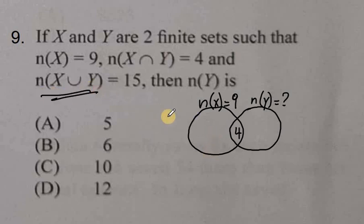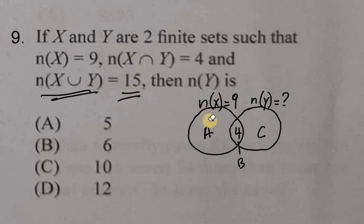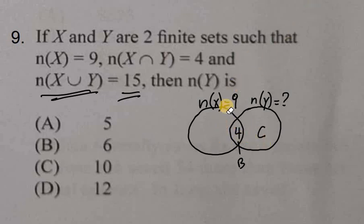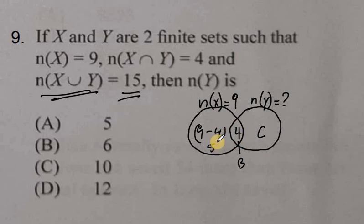In the union, when we add section A, section B, and section C, we should get a total of 15. Section A is the part of set X only, section B is the middle intersection, and section C is the part of set Y only. In section A, the entire set X has 9 elements. Take out the middle portion — that's 4 — and the remaining portion in section A should be 5, so that when we add it to the middle section we get a total of 9 members in X.